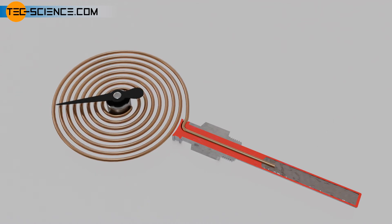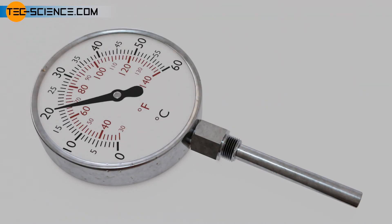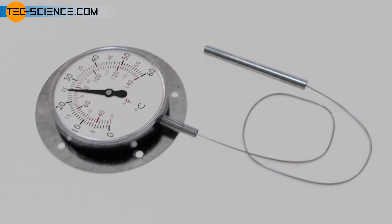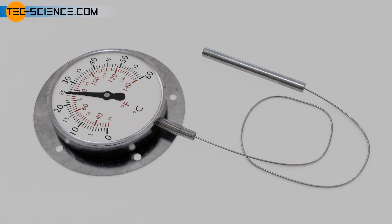If large distances have to be covered, liquid-in-metal thermometers can also be equipped with a flexible capillary tube that is placed between the gauge and the temperature sensor.